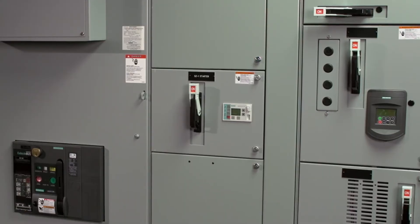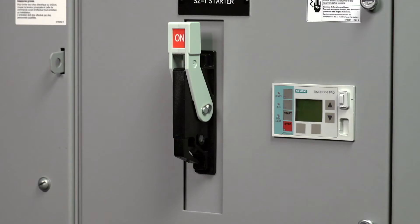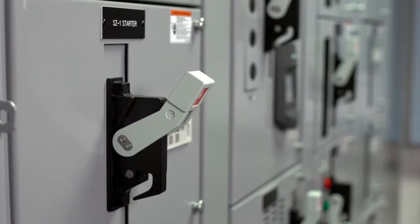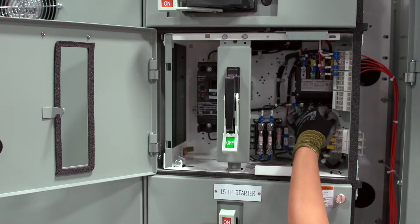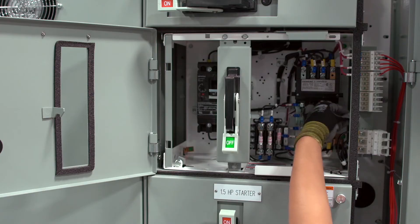Units have the industry's best operating handle that clearly indicates if the unit is on, tripped or turned off. And terminal blocks inside each unit swing out to make wiring simple.